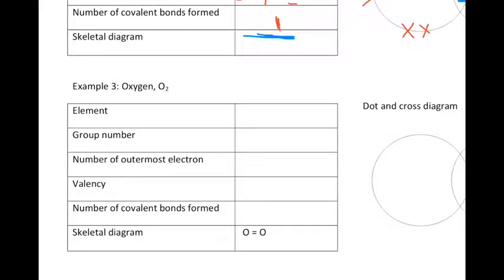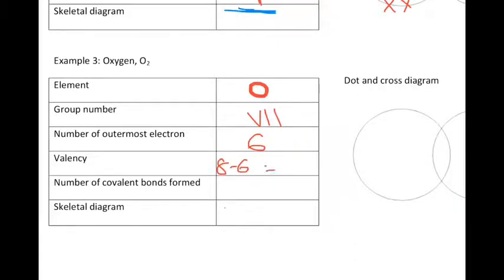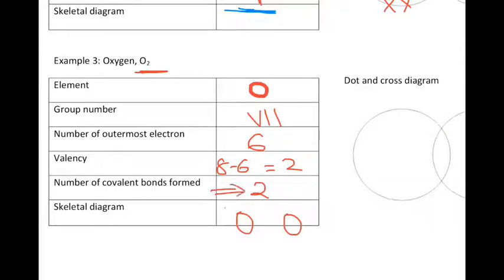Let's see for O2. The element is oxygen. The group number is group 6. Number of outermost electrons is 6. Valency is 8 minus 6, that's 2. So number of covalent bonds formed is 2. There are 2 oxygen atoms, so I should have oxygen and oxygen, and they should form 2 bonds.